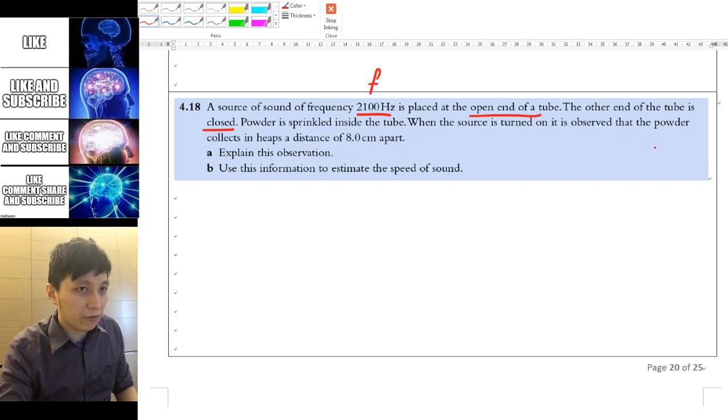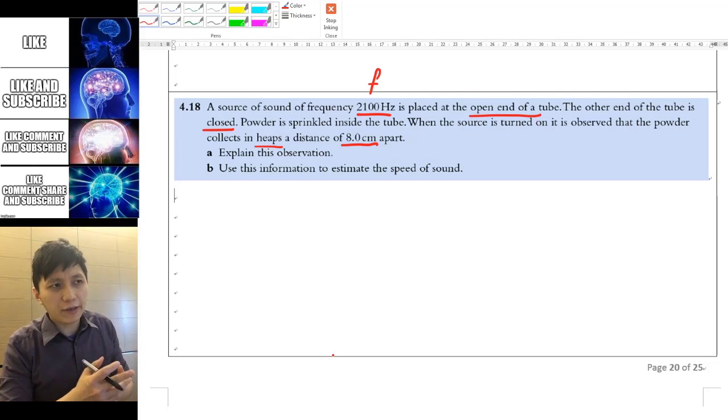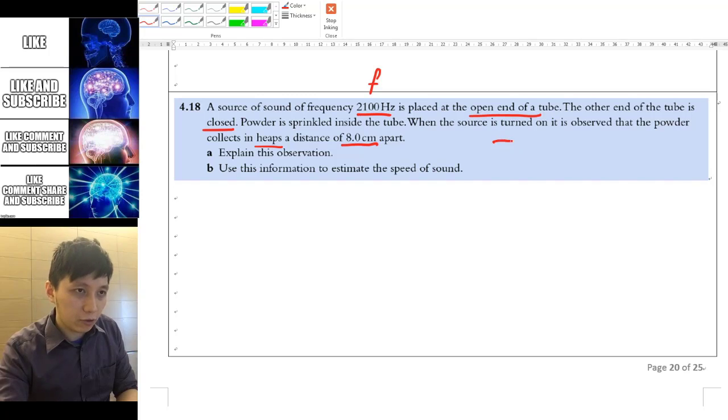and we can observe that the powder will collect in heaps. That means that they will just gather together at a displacement of 8 cm apart. So you may be wondering why you are not given the length of the tube or the number of the harmonic. Because this doesn't really matter.